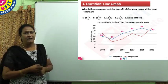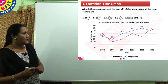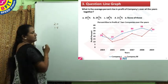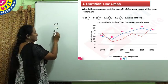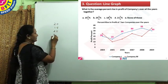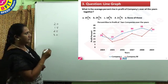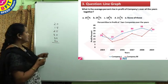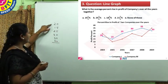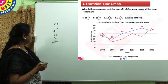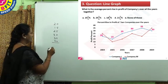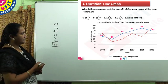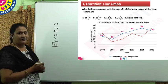We have the working slide. Adding all the data for company L: 20 plus 15 plus 25 plus 30 plus 35 plus 30. Adding all the values: 35, 70, 130, then adding 25 to get 155. So the total percent rise is 155.